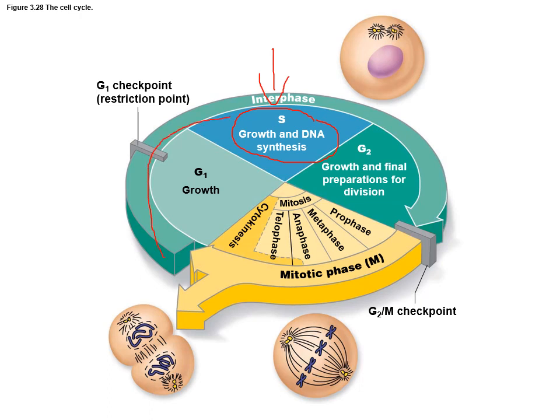Interphase is the longest part of the cell cycle because that is when the cell is doing its day-to-day activity, starting with G1, where you have a brand new cell that will start to grow and start doing transcription and translation and function as that cell is meant to function. Then it will do the S phase, double its DNA going from 46 to 92. After that, there is a G2 subphase — making sure everything is ready for cell division, that there are no mutations and that all the proteins are working properly so the cell can smoothly go into cell replication.